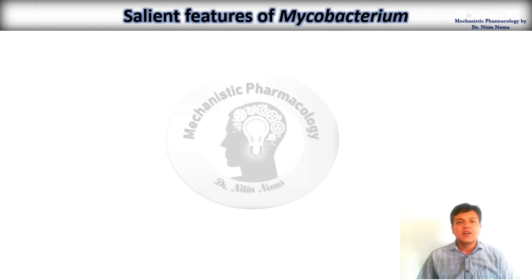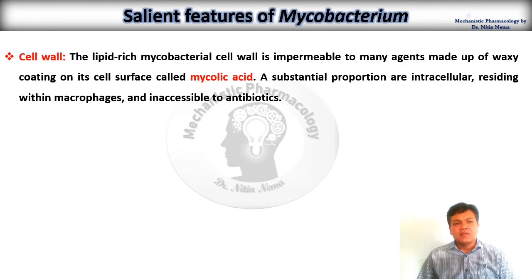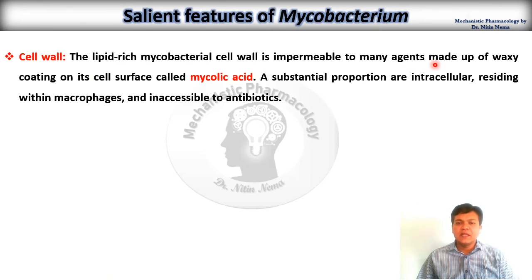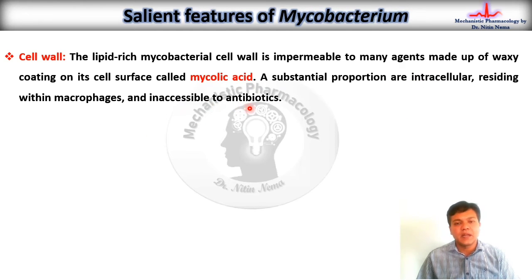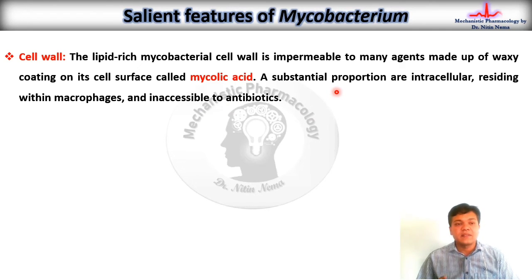Heading towards the salient features of Mycobacterium — the cell wall is a very important constituent of Mycobacterium tuberculosis. The lipid-rich Mycobacterium cell wall is impermeable to many agents and is made up of a waxy coating called mycolic acid. A substantial portion of the bacteria are intracellular, residing within macrophages, and therefore inaccessible to antibiotics. Due to its lipid-rich content, a maximum portion of this microorganism becomes intracellular, residing inside the macrophages — one of the defense mechanisms of our body — which is why they are inaccessible to antibiotics.